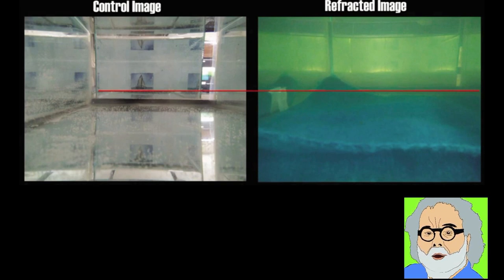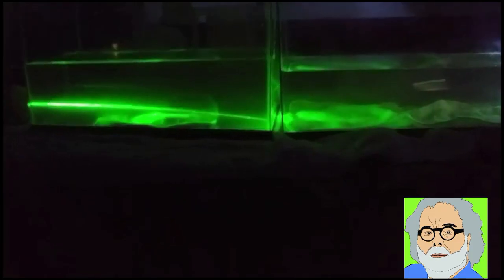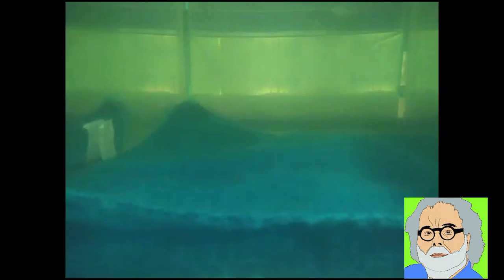He immediately says that the bottom of the fish tanks looks much higher in the refracted image than in the control image. Now let me show you what the boat looks like when the light gets refracted downward. Here our camera is in the exact same location as our control image and now we are looking through a density gradient.